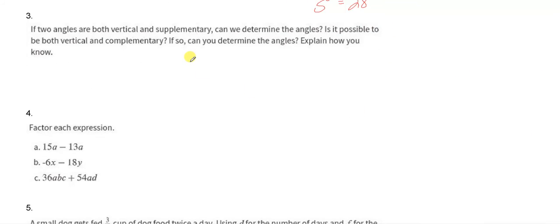If two angles are both vertical and supplementary, can we determine these angles? Is it possible to be both vertical and complementary? If so, can you determine these angles? Let's explain how you know. Let's start with the first one.